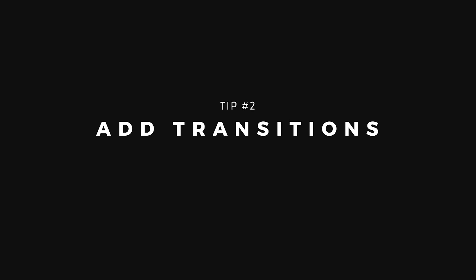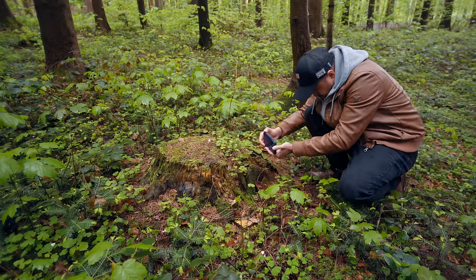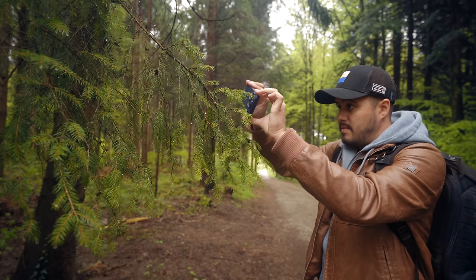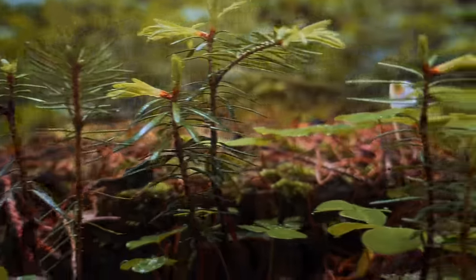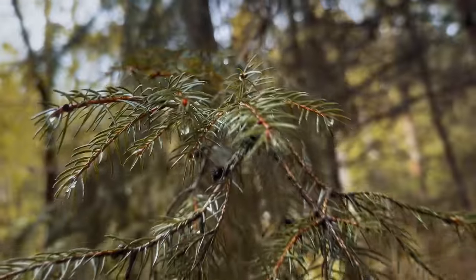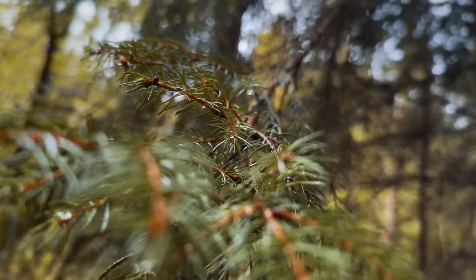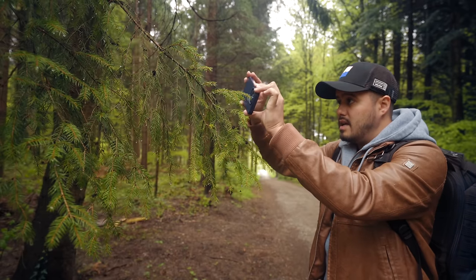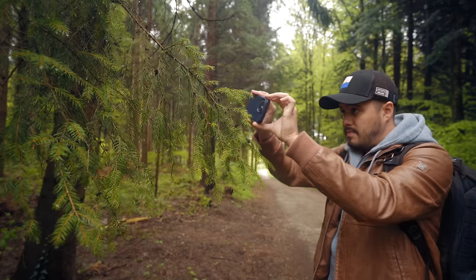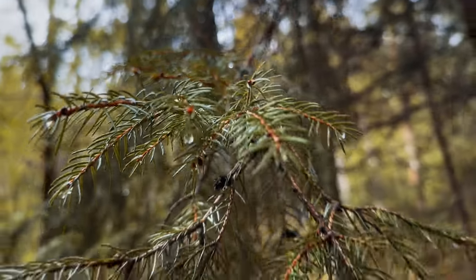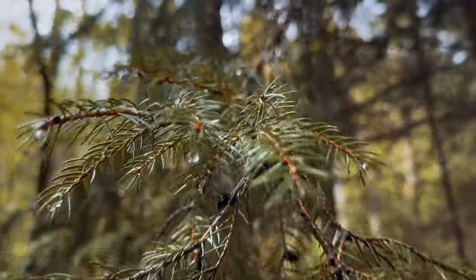The next tip I have for you is to add transitions to your video. One of the easiest transitions is the whip transition, where you basically whip in one direction in the first shot, and then whip in the same direction in the second shot. And because there's a little bit of motion blur, it will also make the transition more seamless. Now, it's sometimes difficult to get the focus right on the second shot. So what I usually do is I first set the focus to where the end point is, and then sort of do everything in reverse, where I pull back and then create the whip transition. And then in the edit, I simply reverse that shot, and then you get a nice seamless transition with an accurate focus at the end.